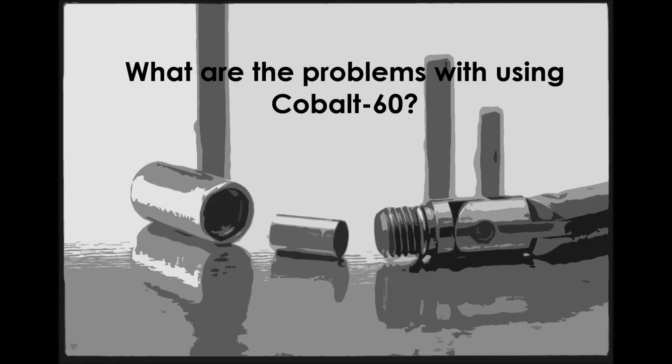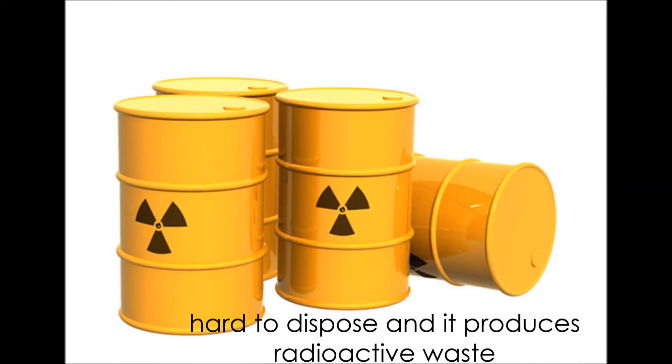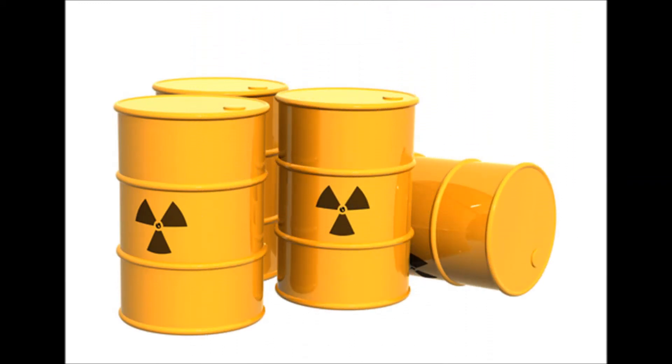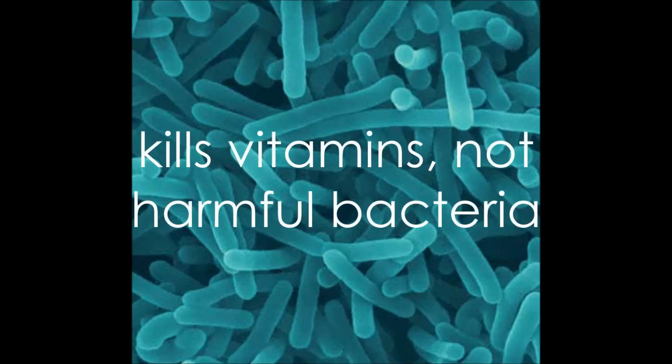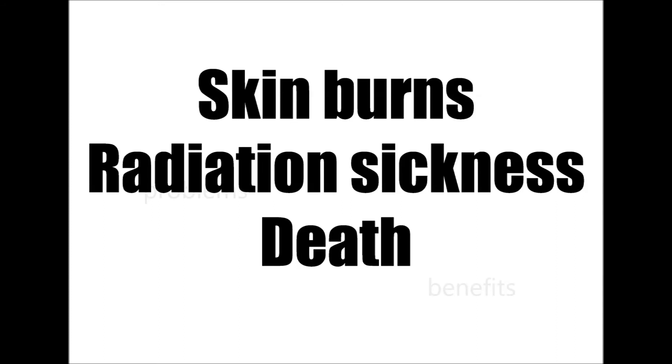Although there are many benefits of using Cobalt-60, there are a few problems. Exposure to gamma radiation from Cobalt-60 can result in an increased risk of cancer. It is hard to dispose of expended Cobalt-60 and the production of Cobalt-60 produces radioactive waste. Some even say that it destroys vitamins and does not always remove the harmful bacteria. Skin burns, radiation sickness or death can occur due to exterior contact to large quantities of Cobalt-60.